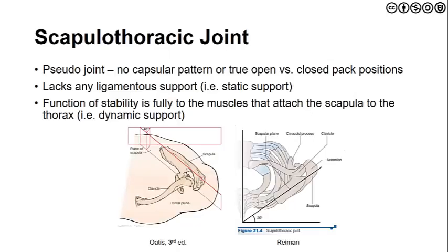Our fourth joint is a pseudo joint — the scapulothoracic joint. It is pseudo because there is no capsular pattern and no true open or closed pack position, as there is no arthrokinematic structure or articular surface. It also lacks any ligamentous support. The scapulothoracic joint is really there to stabilize the muscles that attach to the scapula and the thorax, so we must focus on this area when providing interventions for patients with upper quarter pathology.